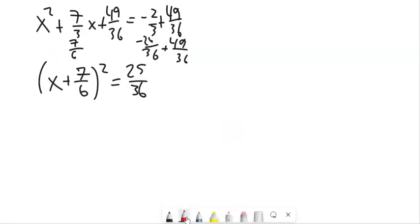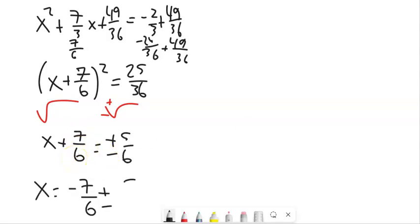Then from here, I would square root both sides. And when I square root over here, the plus or minus comes in with it, leaving me this. Square root of 25 36ths is 5 sixths. And then I would subtract this, and I'd combine those, and I'd be on my way.